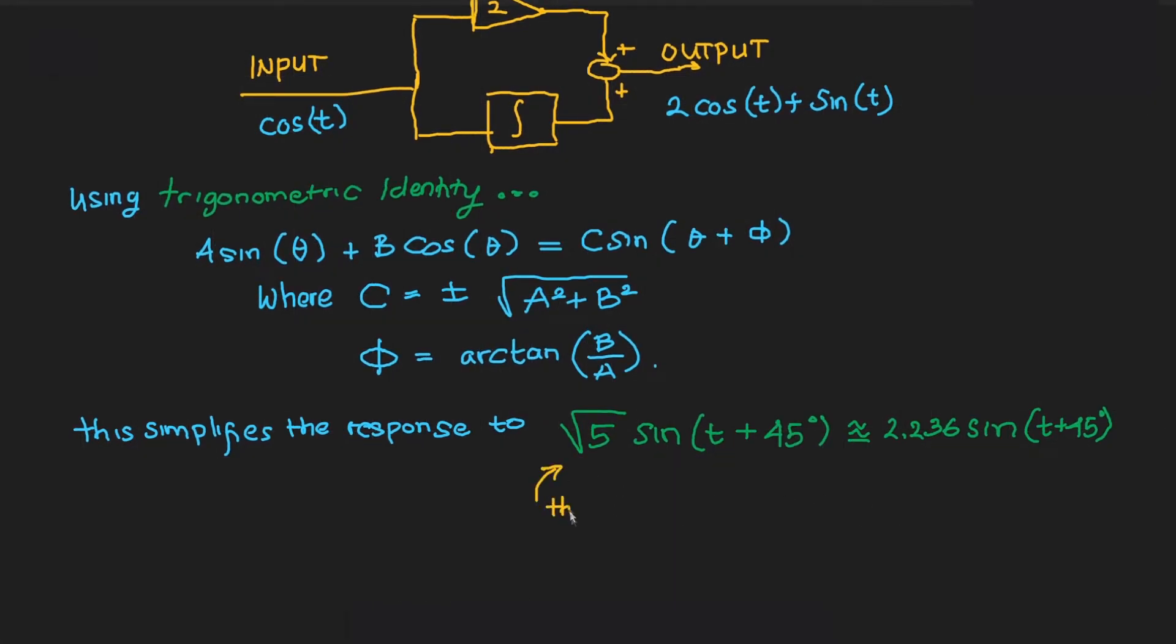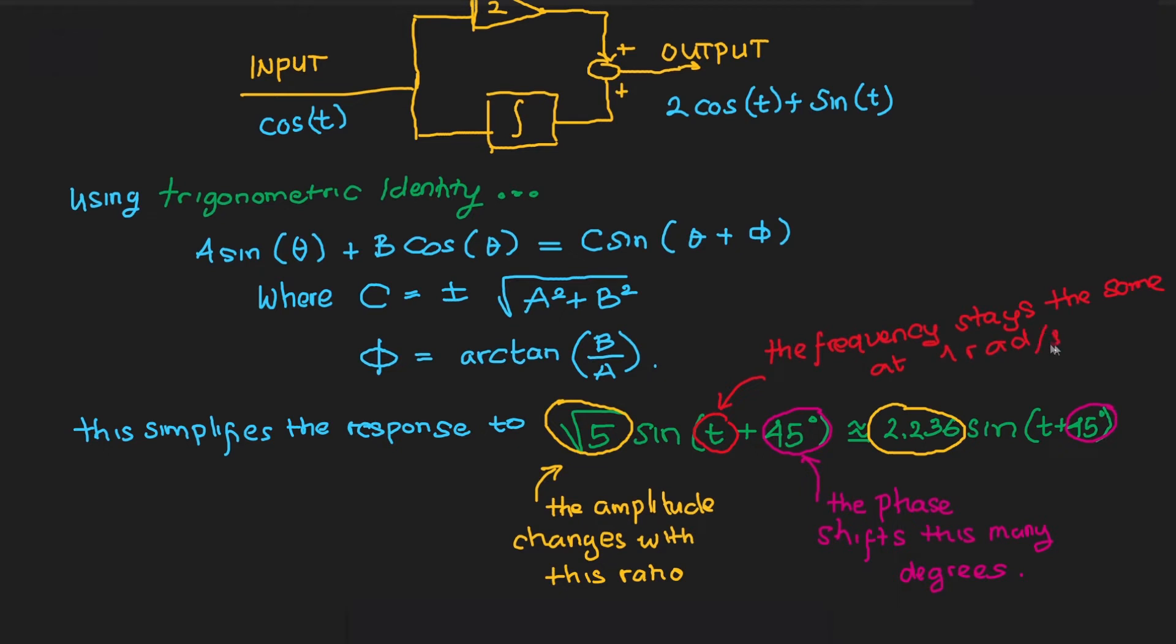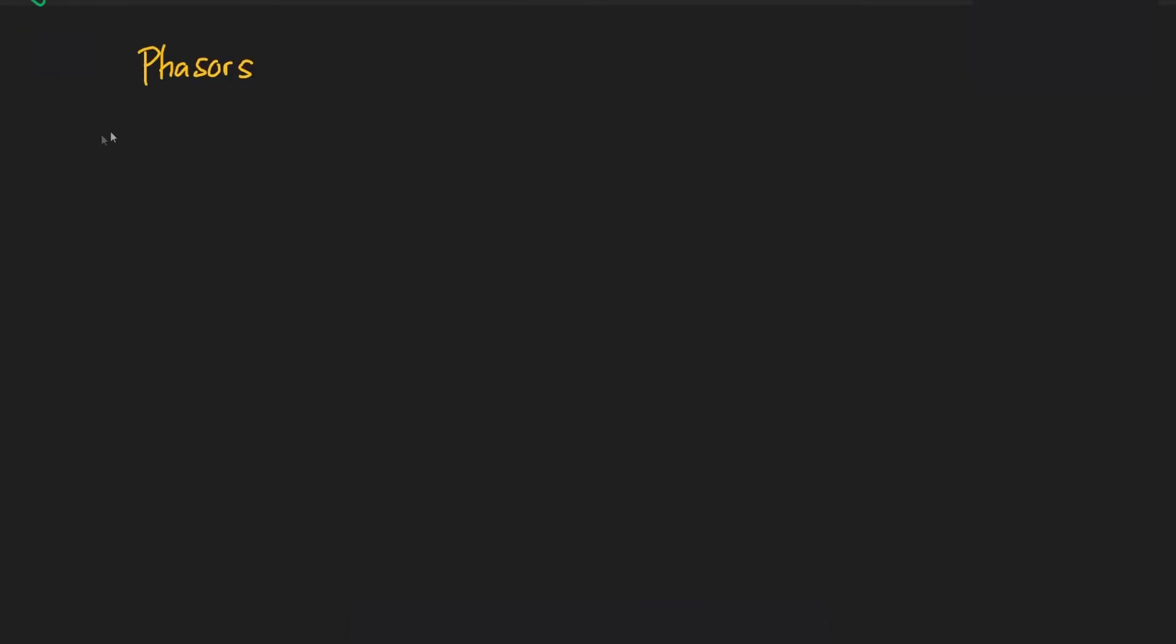The amplitude of the sine wave changes with a ratio of 2.236, and the phase shifts 45 degrees positive. But the frequency stays the same, as long as the system is linear and time invariant, or an LTI system.